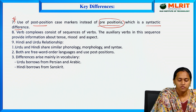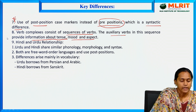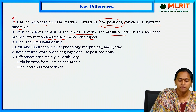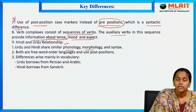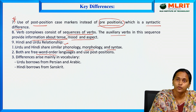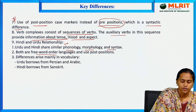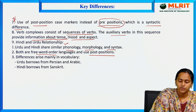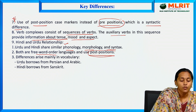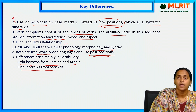Verb complexes consist of a sequence of verbs, where auxiliary verbs provide information about tense, mood, and aspect. Regarding the Hindi and Urdu relationship, Urdu and Hindi share a single phonology, morphology, and syntax, and both use free word order and post-positions. The main difference is in vocabulary: Urdu borrows from Persian and Arabic, while Hindi borrows from Sanskrit. These are the main key differences in processing Indian languages.